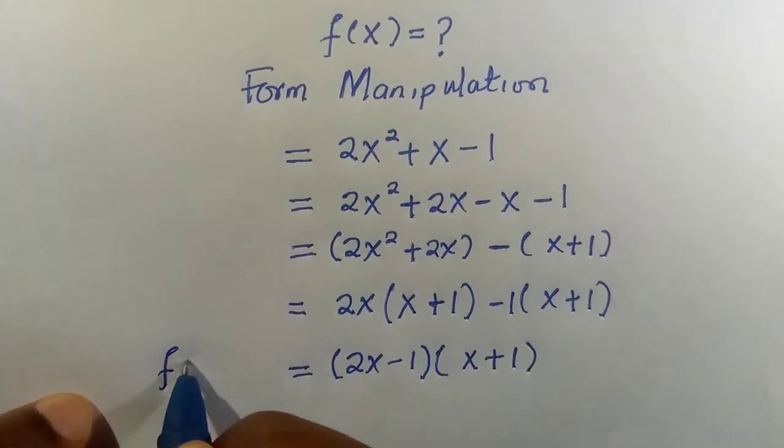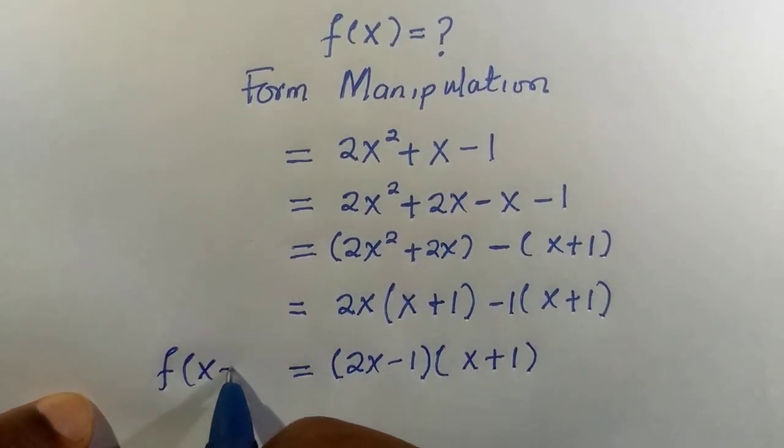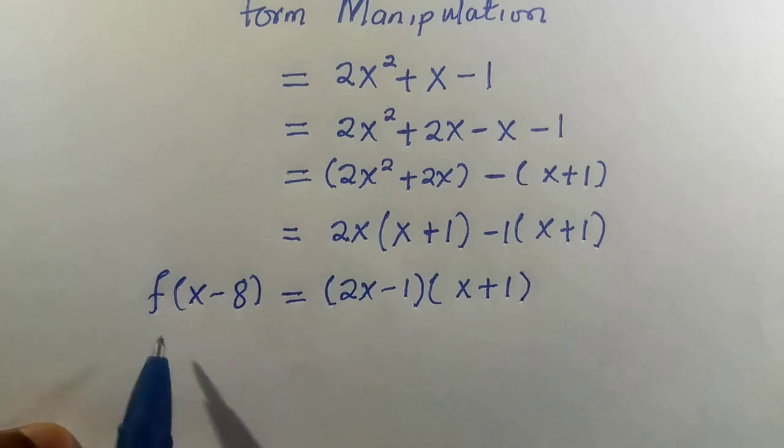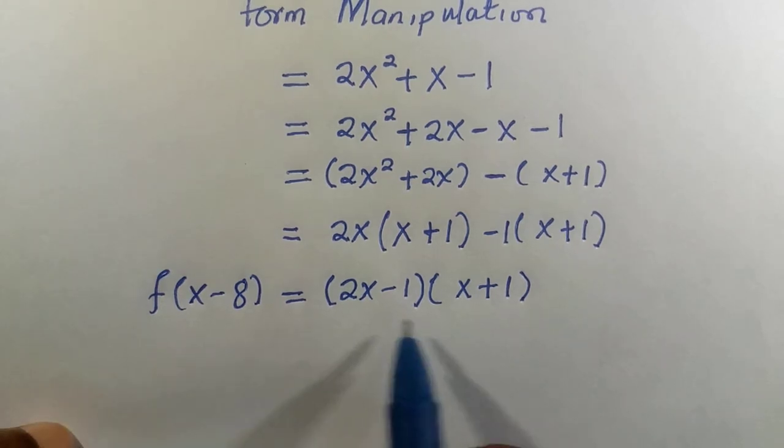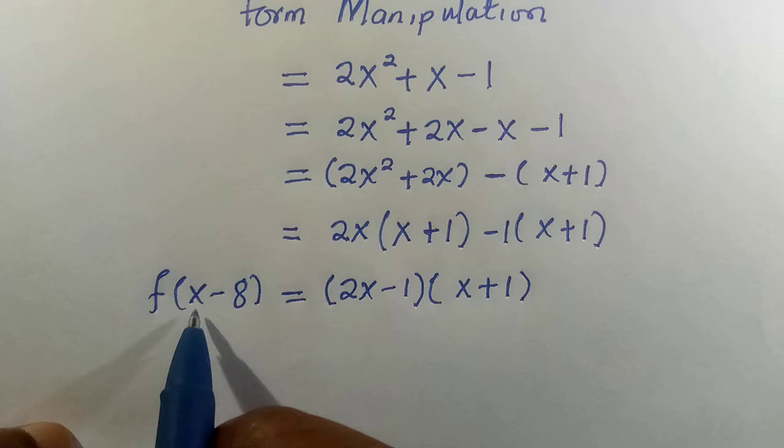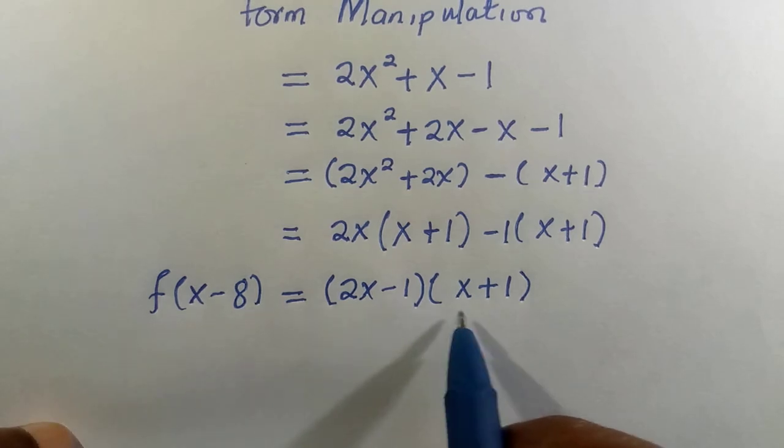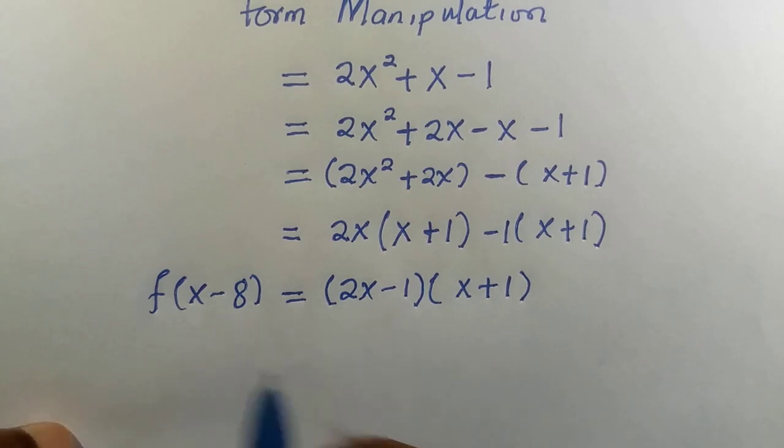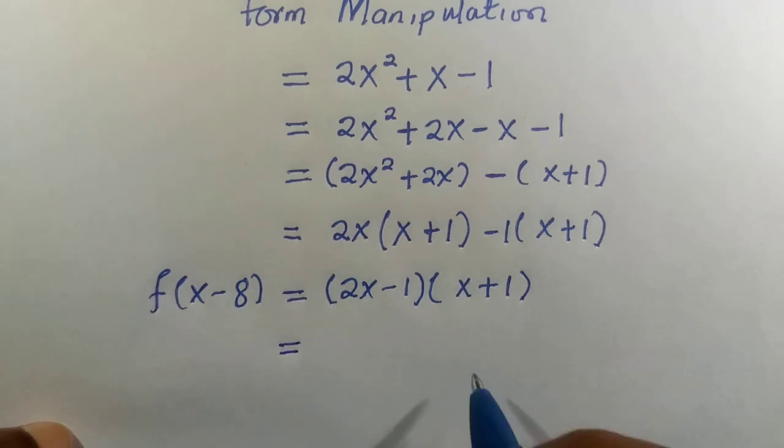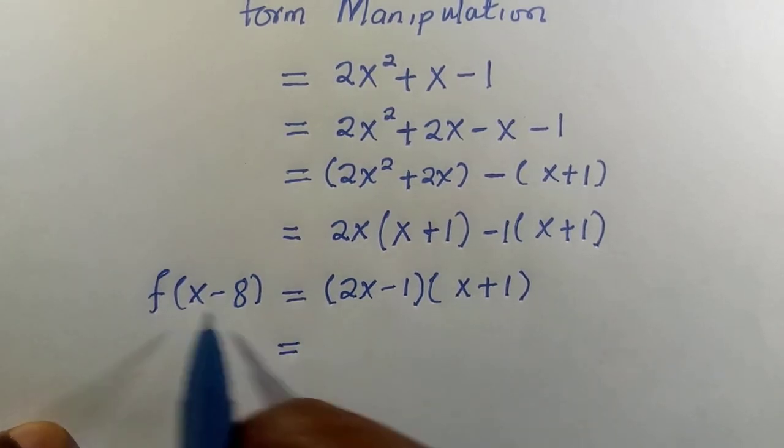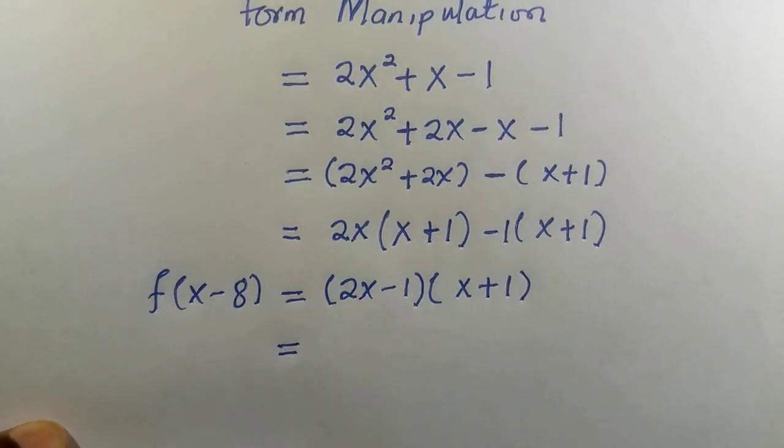We should not forget that everything is equivalent to f(x-8). Now, one thing about functions is what we need here is something that will correspond to this input. We have the input here as the domain, which is x - 8, which means we also need some other domain here that will be equivalent to x - 8. To do that, since we are applying form manipulation, we are going to manipulate this to look exactly as x - 8.